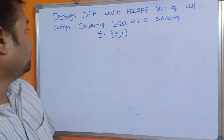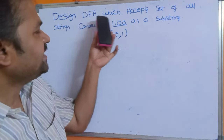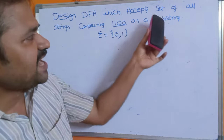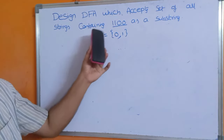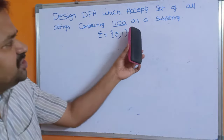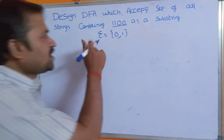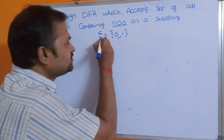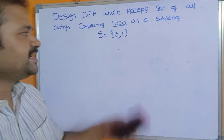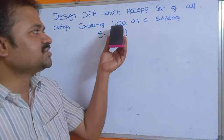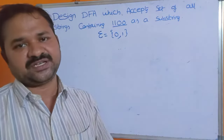Let us solve this problem. Design a DFA which accepts the set of all strings containing 1100 as a substring, over the alphabet sigma equal to {0, 1}. The DFA should accept 1100 as a substring.